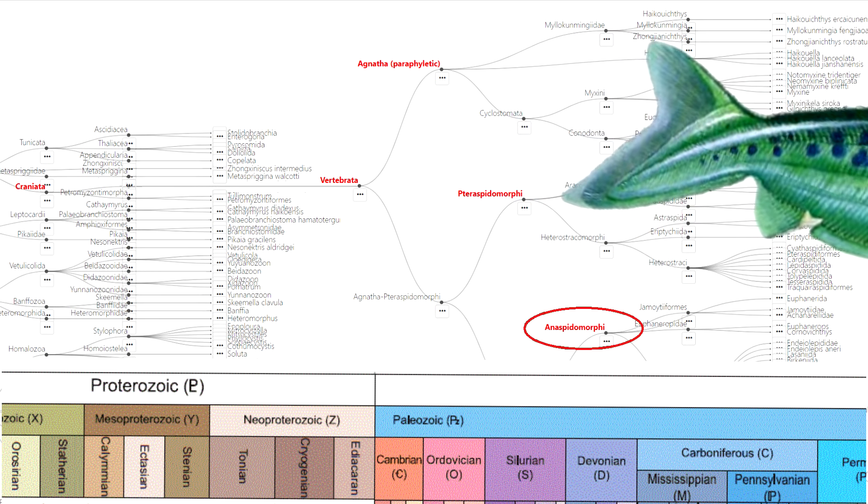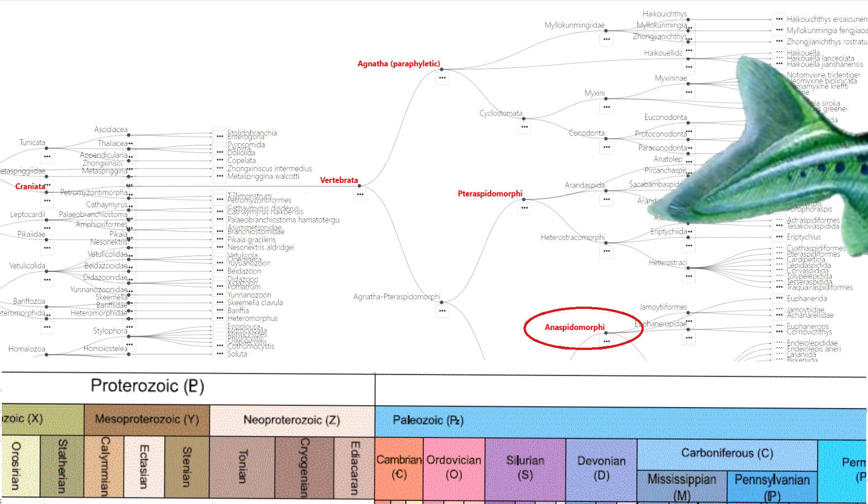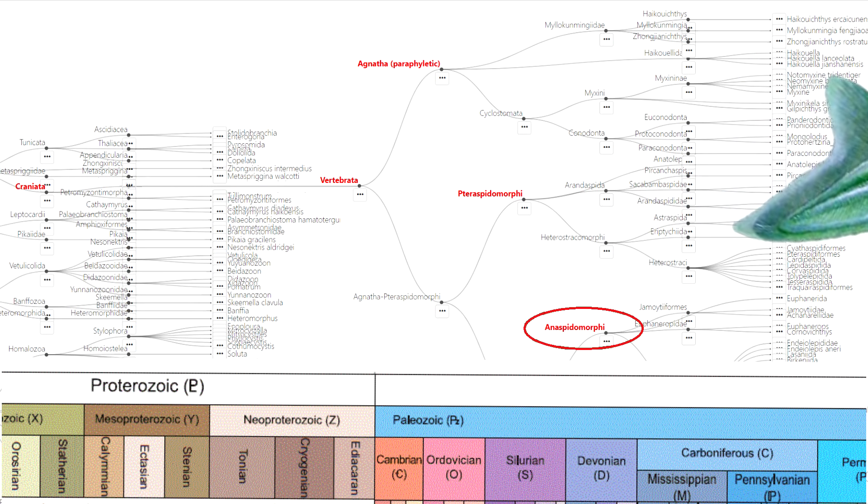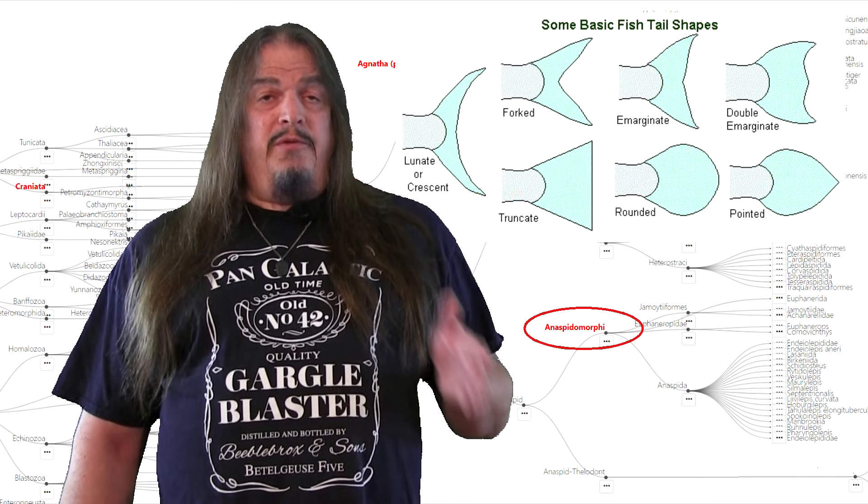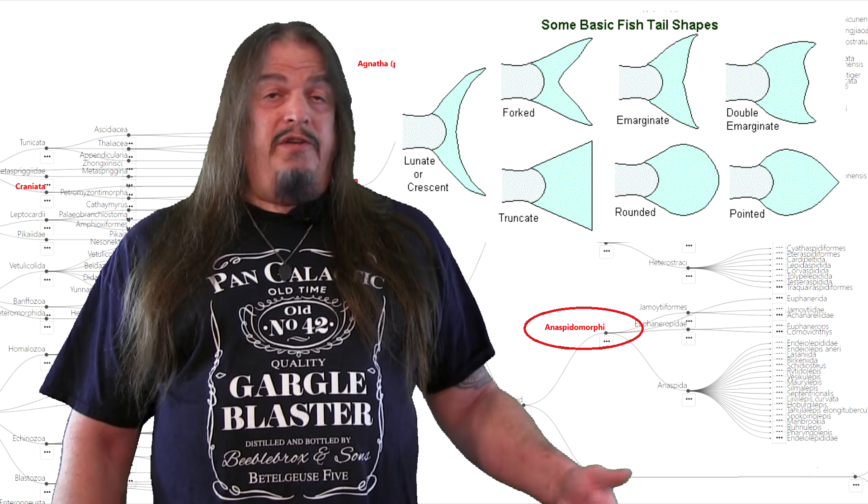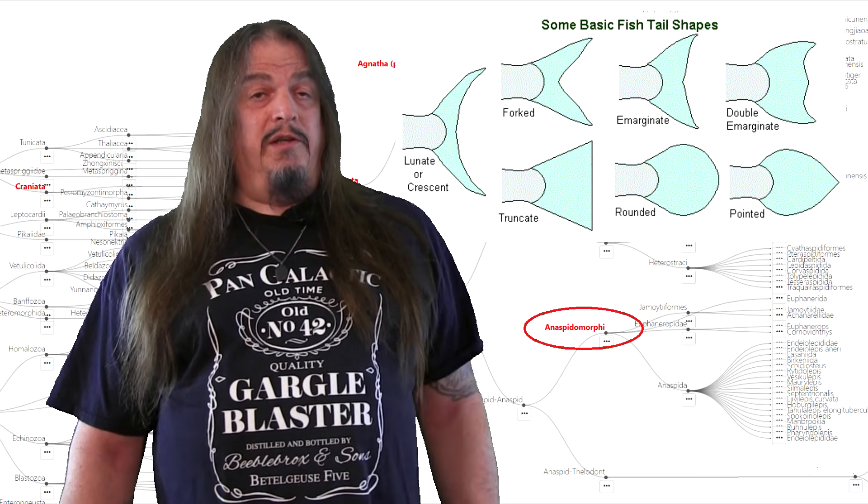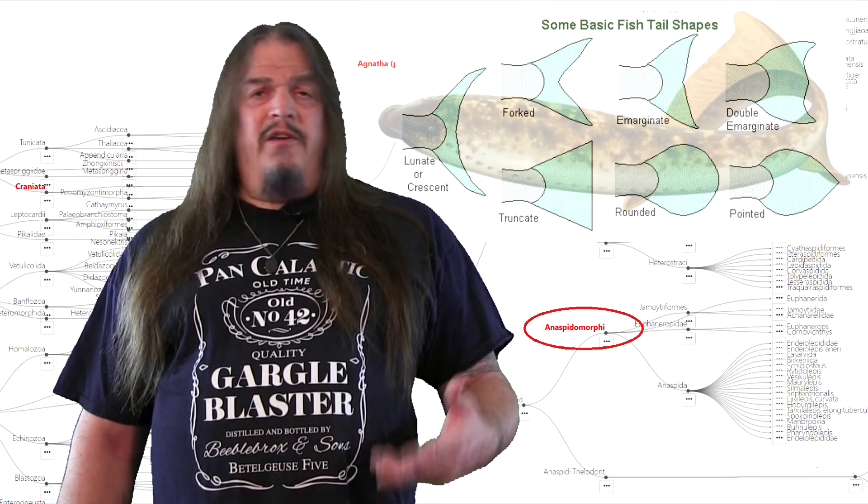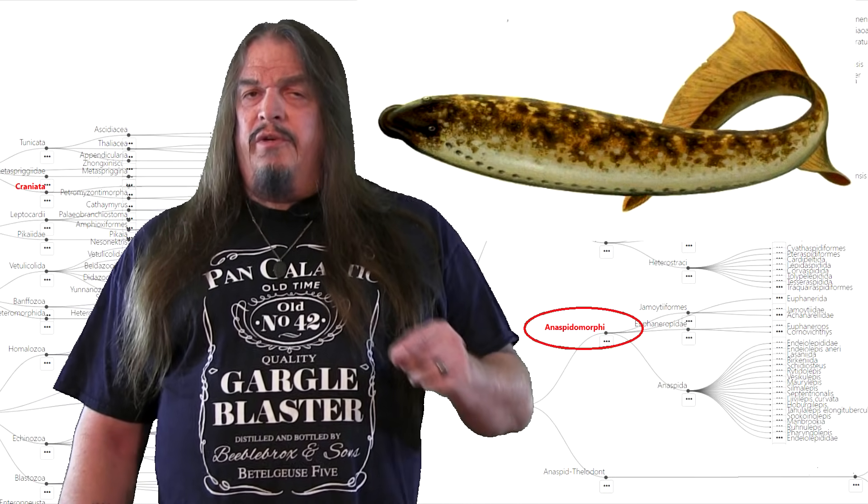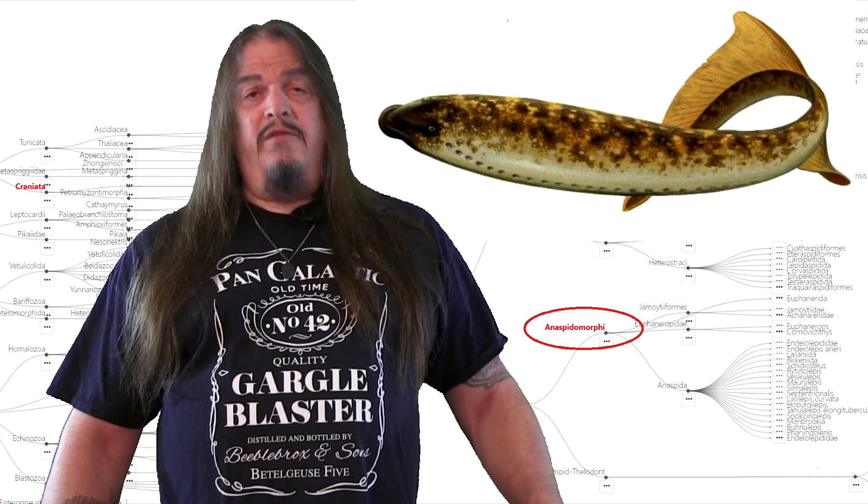Some also have an anal fin in addition to their combination dorsal-caudal fin. You can see here how the originally pointed tail combined with the dorsal fin to make the flukes of a typical fishtail. In many modern fish, the tail tapers flat into the rays and the caudal fin takes a number of shapes required by the type of swimming these fish typically do. So anaspids have more modern fins, but they still don't have pectoral fins. No paired fins.